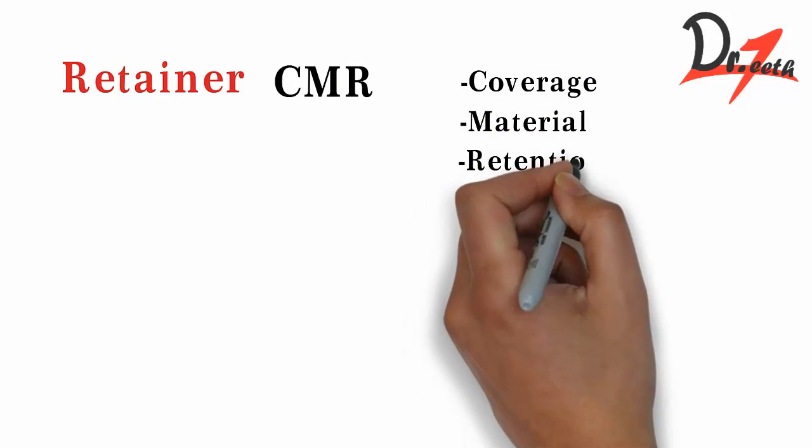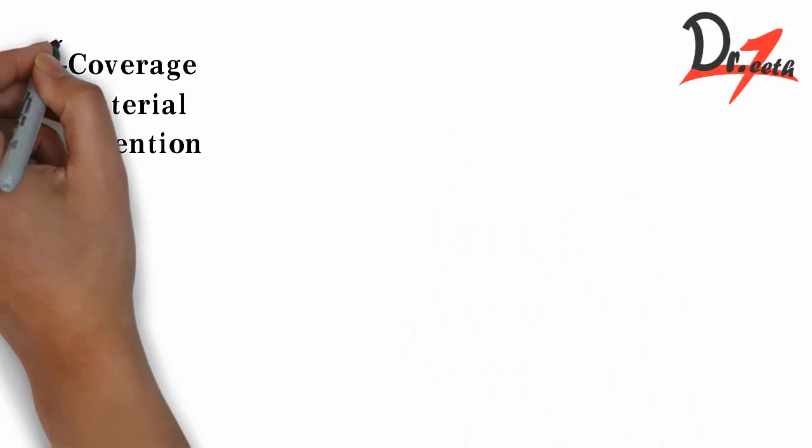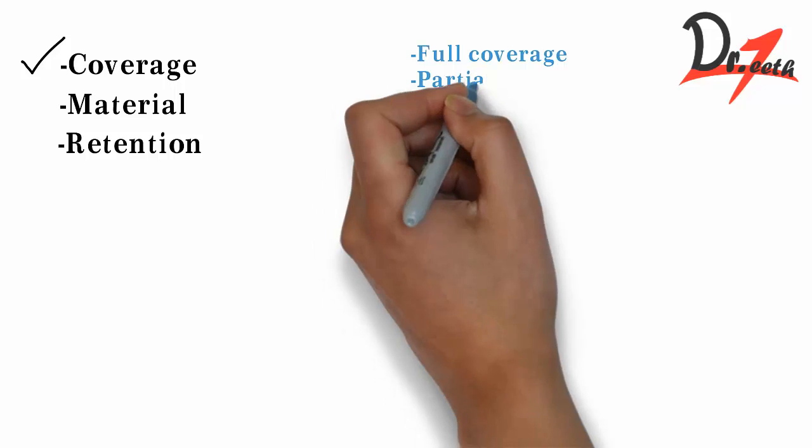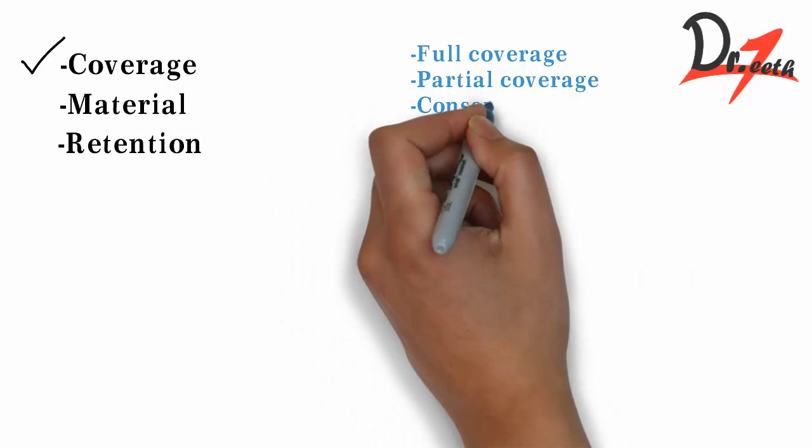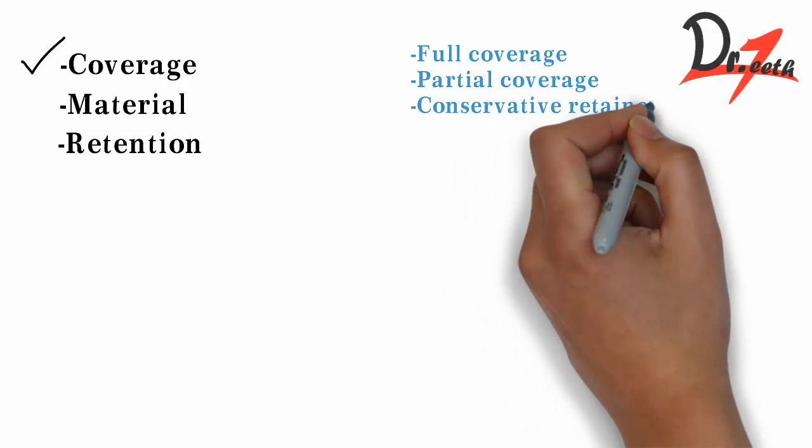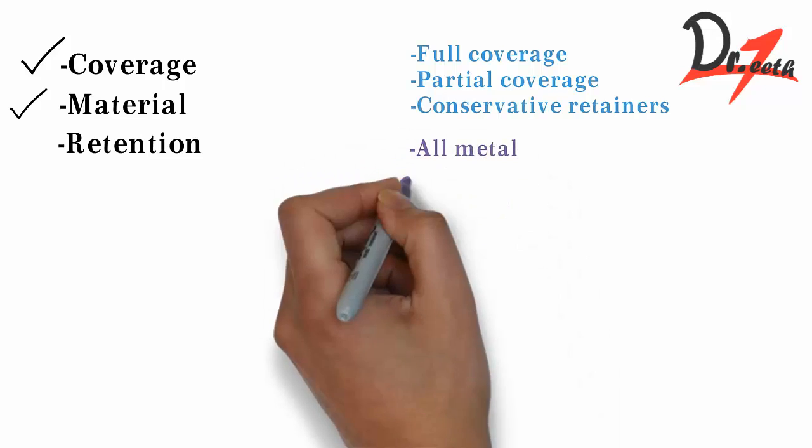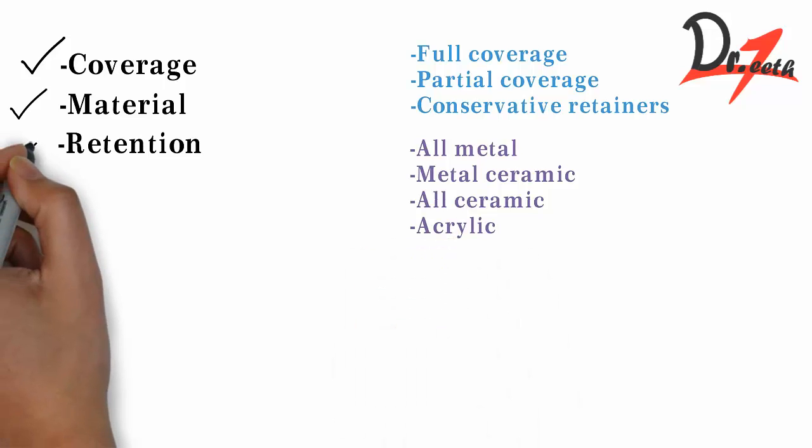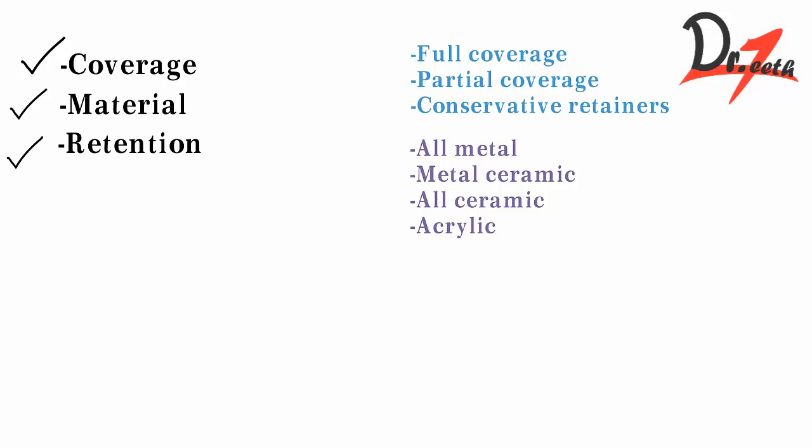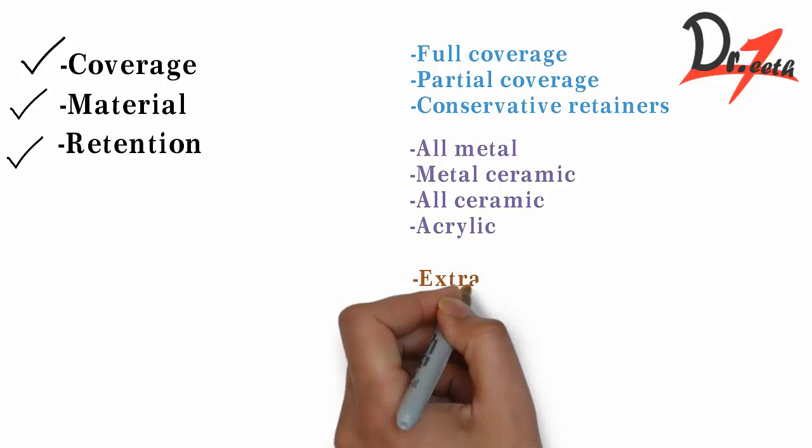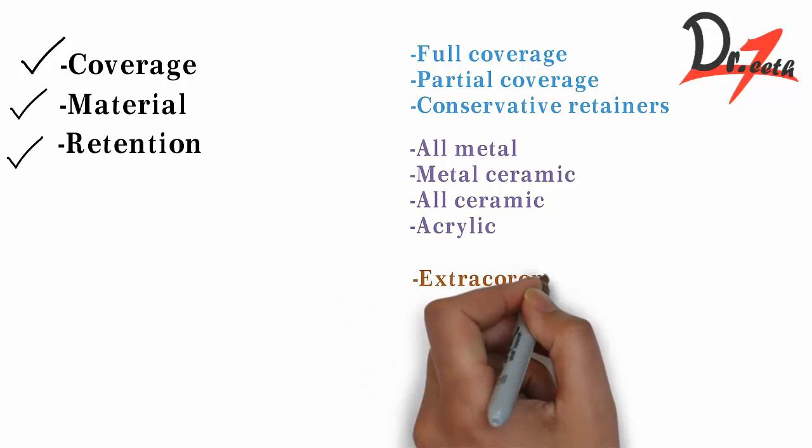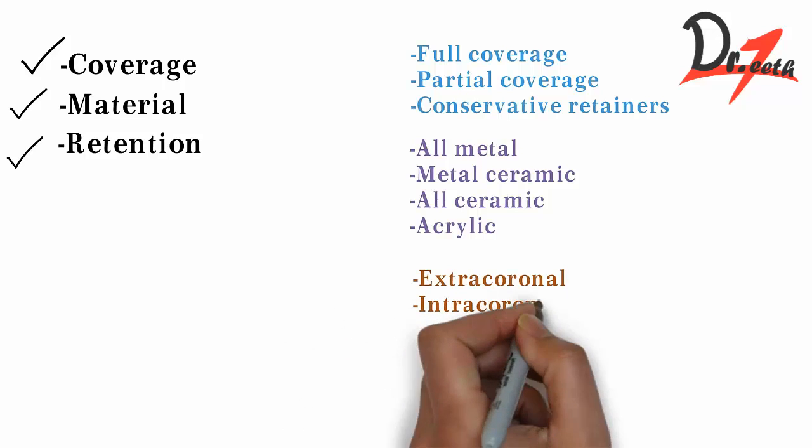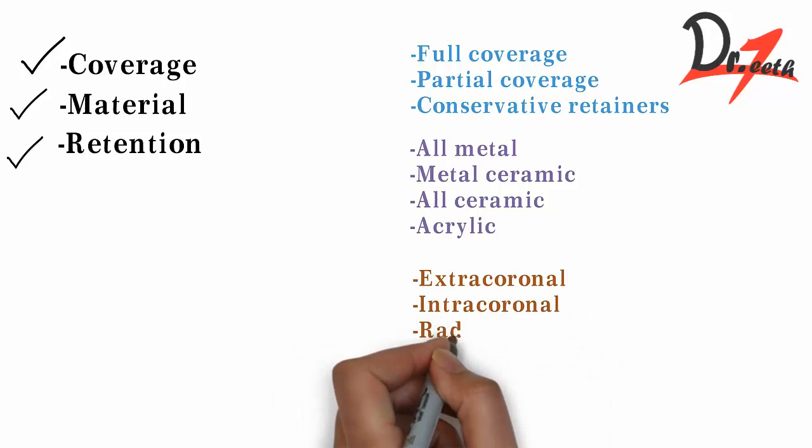With the retainer we classify by CMR - coverage, material, and retention. With coverage there are three types: complete coverage which we call full veneer retainer, partial coverage which we call partial veneer retainer, and conservative retainer which we give to anterior teeth. With material, same as before: all metal retainer, metal ceramic, all ceramic, acrylic. With retention: extracoronal and radicular. In extracoronal we have inlay and onlay. In radicular, retention is on the root of the abutment.